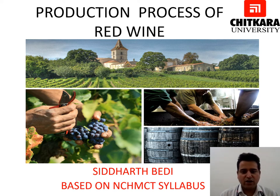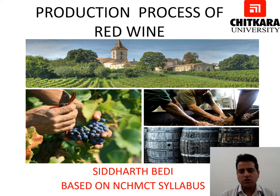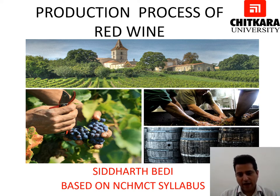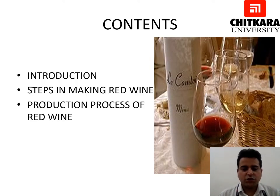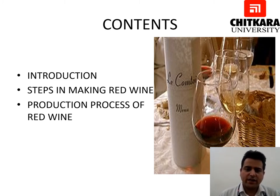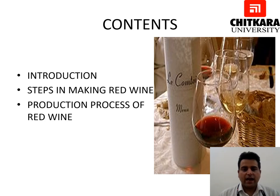Red wines are made with red grapes. In this photograph you can see a beautiful vineyard in France, the plucking and crushing of grapes taking place for wine production, and in the fourth photograph on the right, oak barrels used for aging of wines. Today we are going to talk about the introduction to red wines, the steps in making red wine, and the production process in detail.